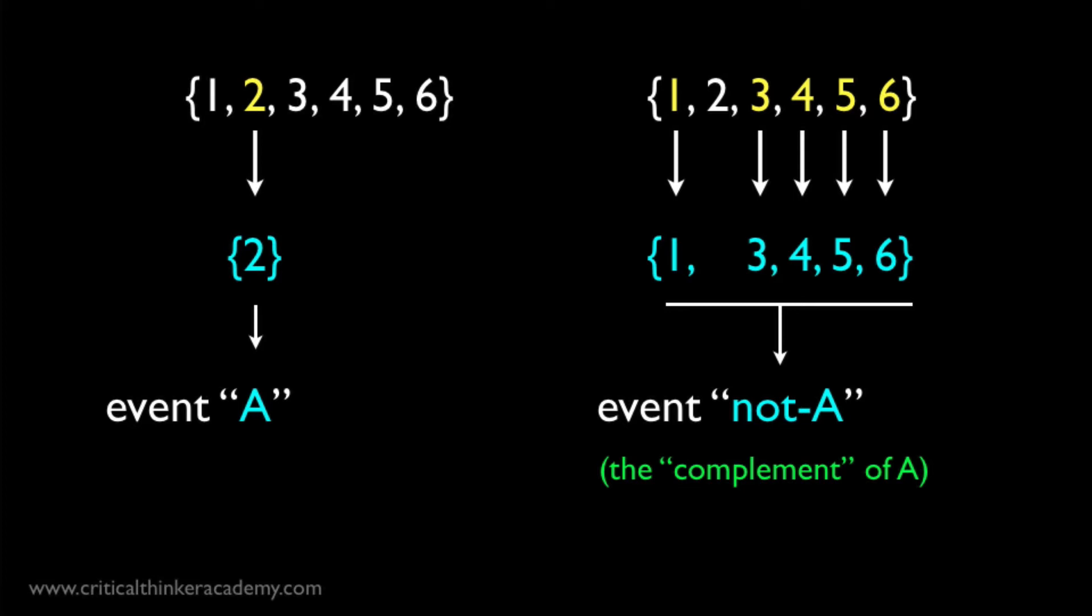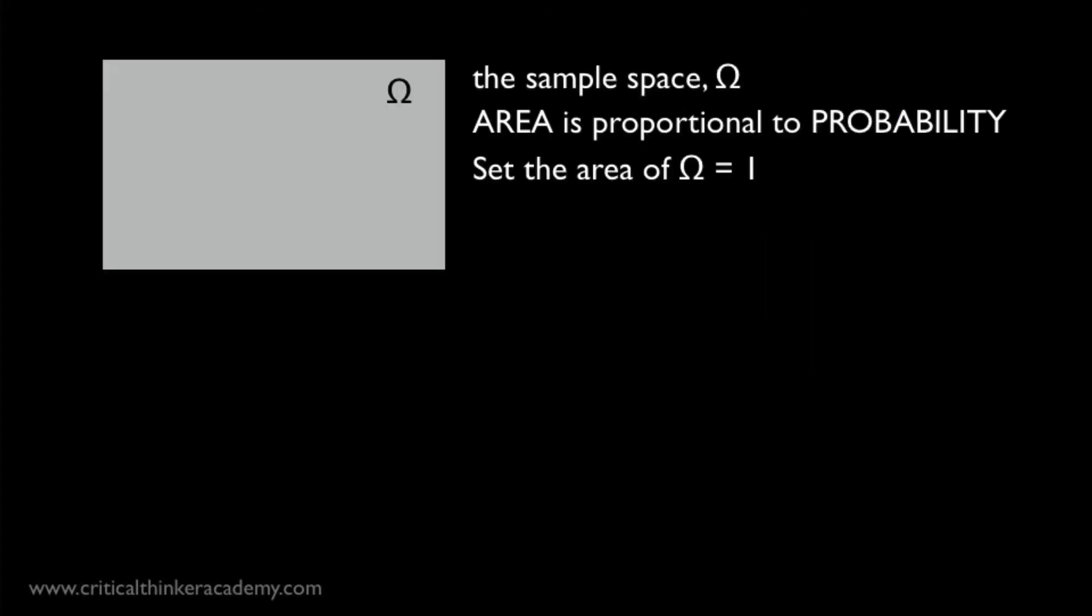And when you conjoin these sets together, you recover the whole sample space. Because A and not A partition the sample space into two parts with nothing left over. So when you put the parts back together, you get the whole space back. We can generalize this point graphically.